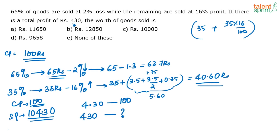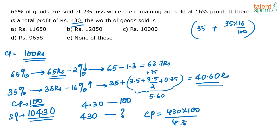Now I need to find the cost price when the profit is 430. So the required cost price is 430 multiplied by 100 divided by 4.30, which equals 10,000 rupees.